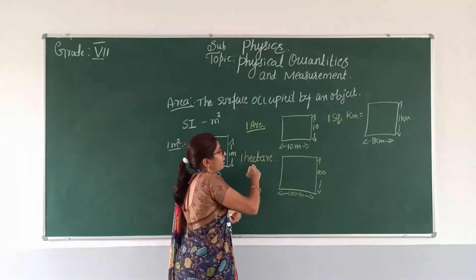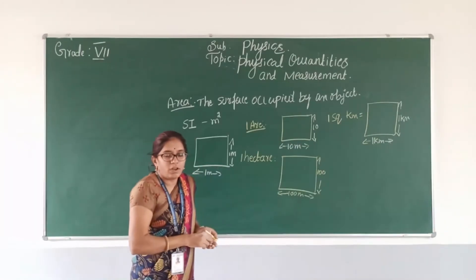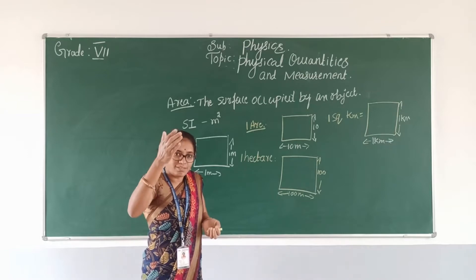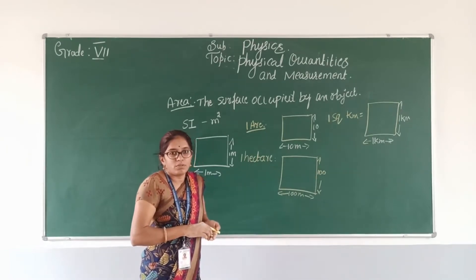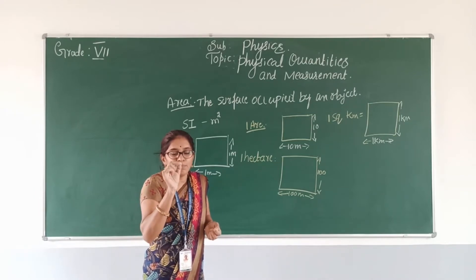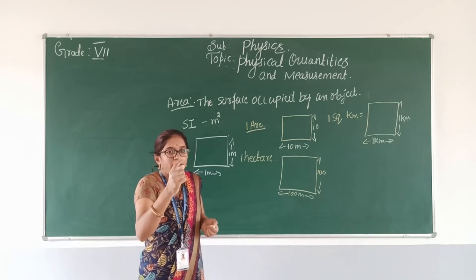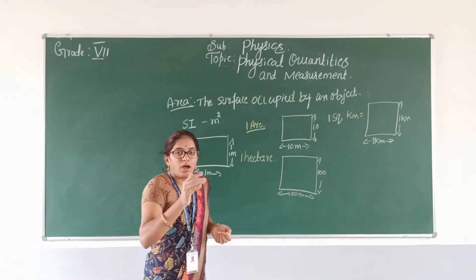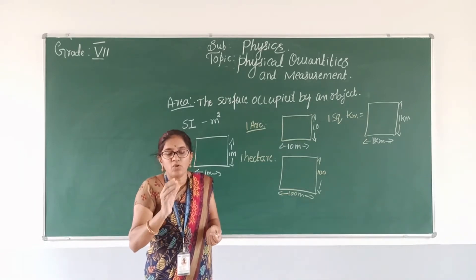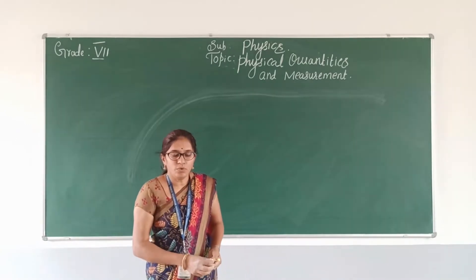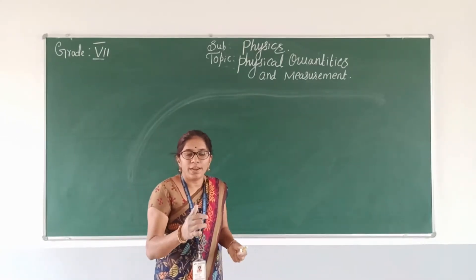So the units used to measure areas larger than meter square are hectare and square kilometer. If you want to find out an area which is less than meter square, that time I cannot use meter square. I have to use either centimeter square or millimeter square in order to find out that area.